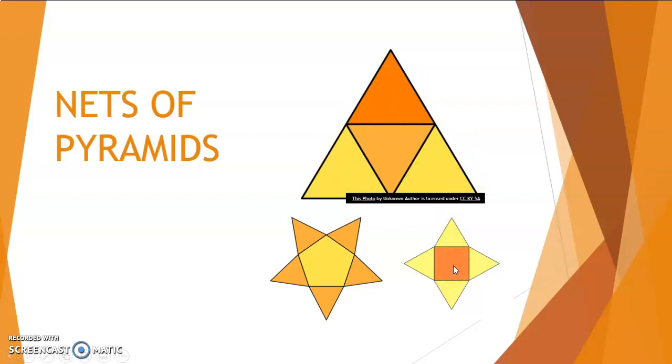If I look at my square base pyramid, it has a square and four triangles for my side faces. The same goes for my pentagonal pyramid. It has a pentagon at the bottom and five triangles that can fold up.